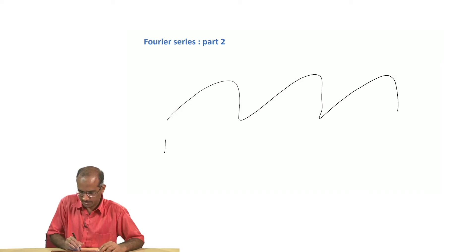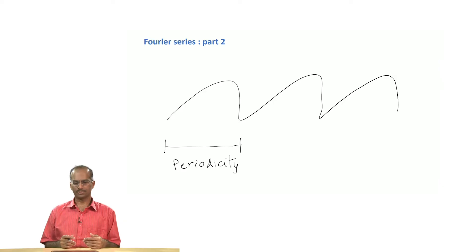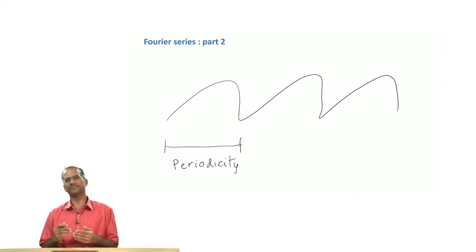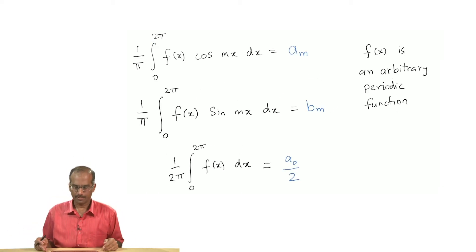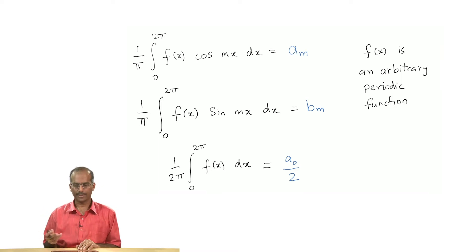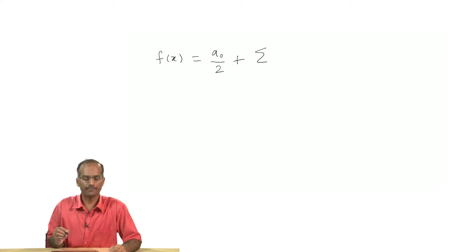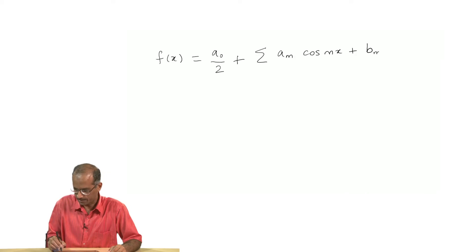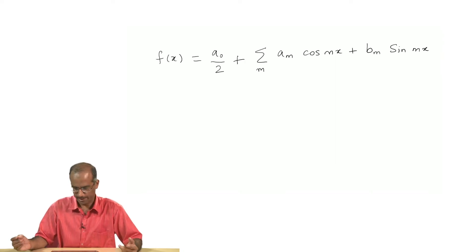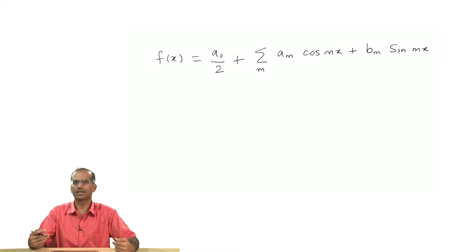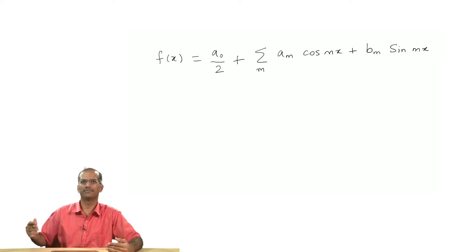You could say that it is periodic with this being the periodicity. In such cases, what we wanted to do is to write these functions in terms of sines and cosines. Given that f(x) is an arbitrary and periodic function, we calculate the coefficients a_m, b_m, a_0/2 and so on, and finally assemble them in a formula: f(x) = a_0/2 plus an infinite summation of a_m cos(mx) + b_m sin(mx) over all integer values of m. The physical interpretation is that your periodic function is made up of these following frequencies.